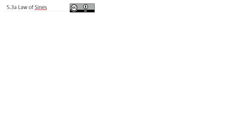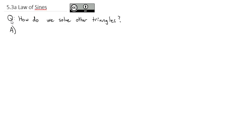As we work to solve right triangles for missing sides and missing angles, we had the caveat that it had to be a right triangle. That begs the question: how do we solve other triangles — triangles that have no right angle in them? The answer is a two-part answer. We'll cover part one in this video and part two in the next video. First, some theory behind what we're doing.